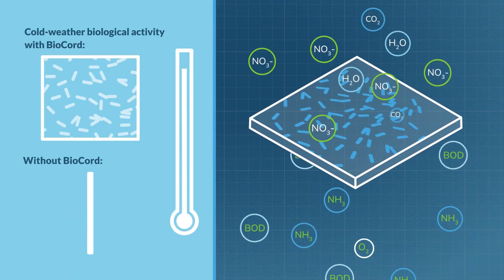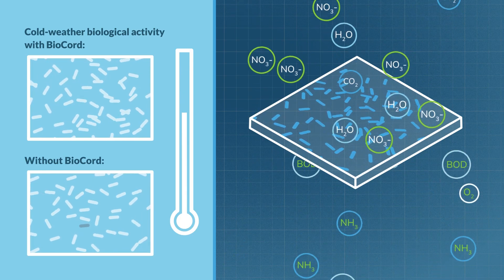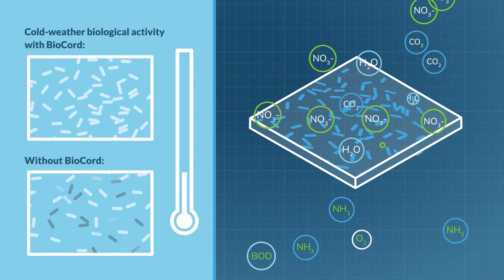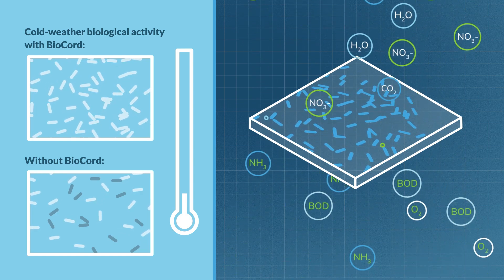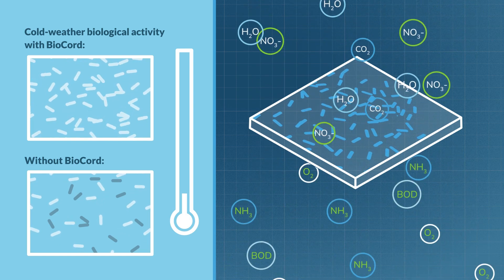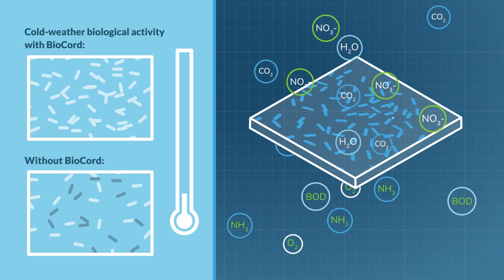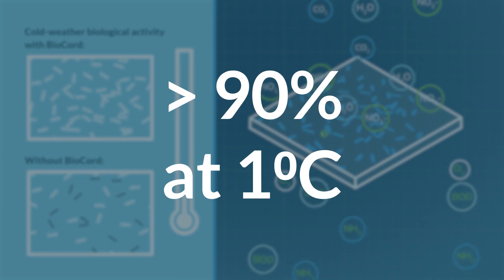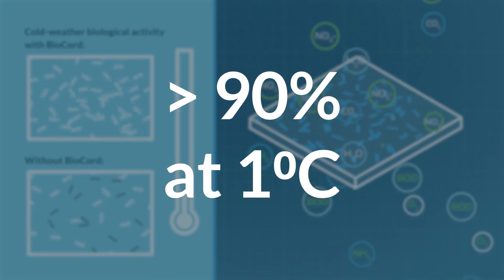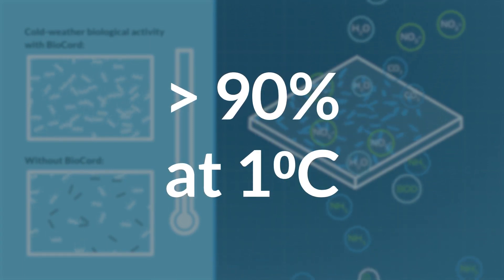This is particularly important in the winter when cold water conditions cause biological activity to slow and lagoons struggle to achieve adequate ammonia removal. The biocord reactors maintain an active microbial population that is proven to achieve ammonia removal of 90% or greater even when the water temperature is as cold as 1 degree Celsius.